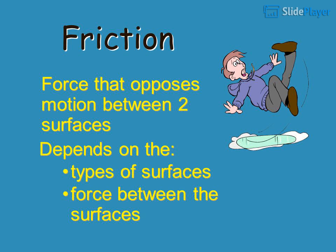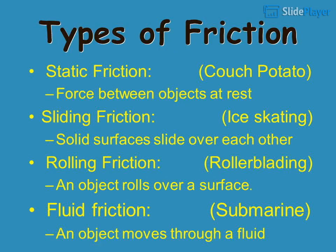Friction is a force that opposes motion between two surfaces, and depends on the types of surfaces and the force between them. Types of friction include fluid friction (example: submarine), static friction — the force between objects at rest — and sliding friction, where solid surfaces slide over each other (example: ice skating).